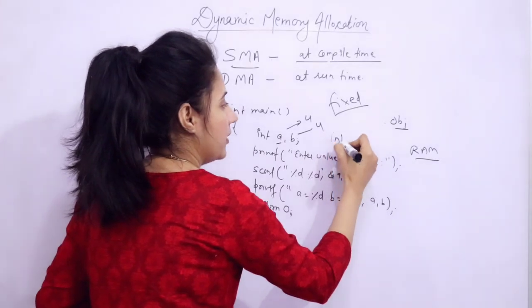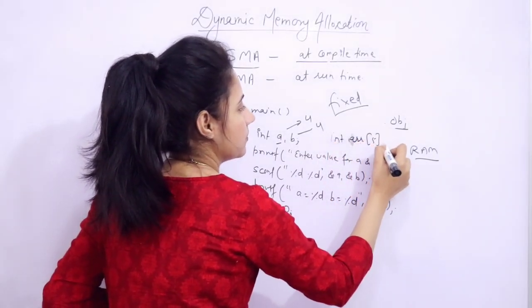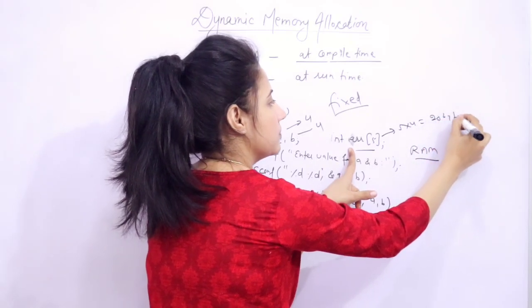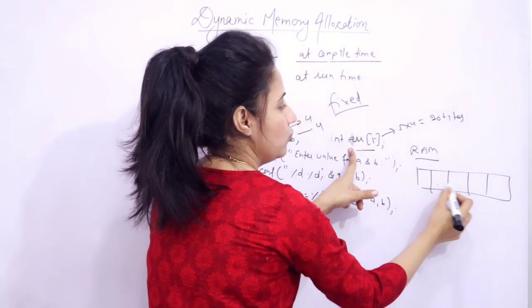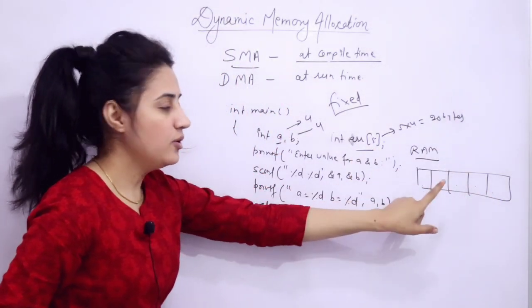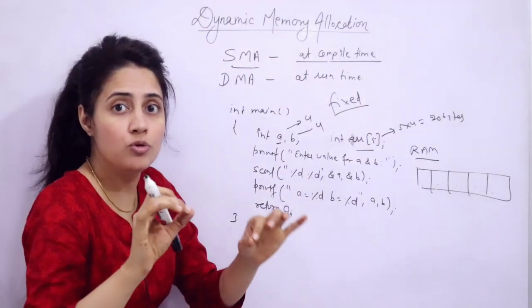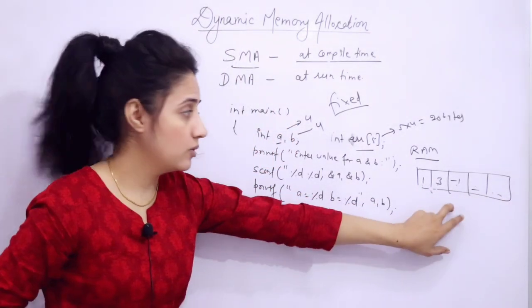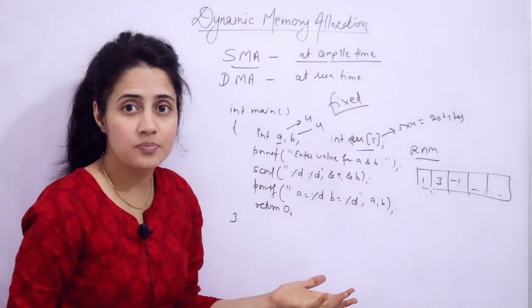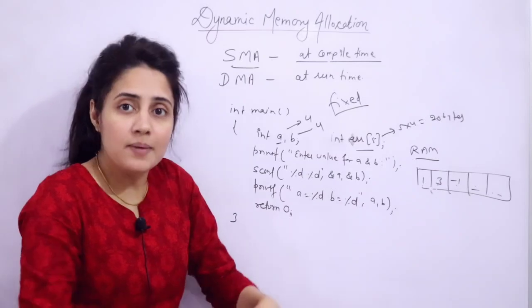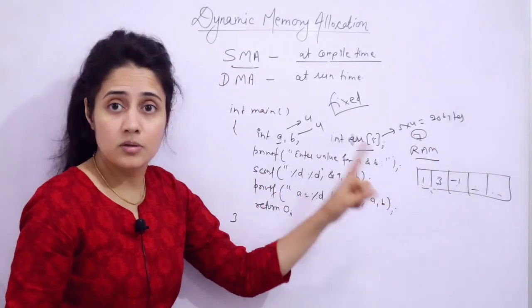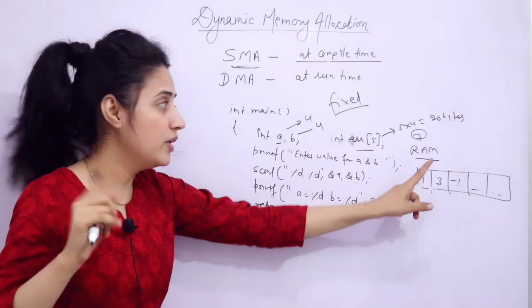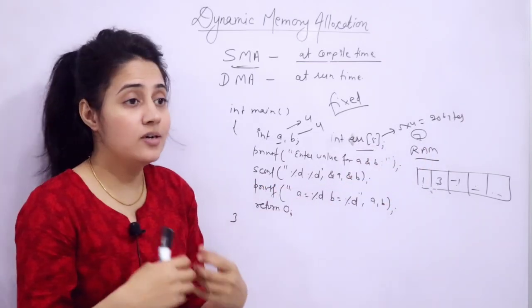Suppose I have taken an array — int array of 5 elements. It is fixed at compile time how many bytes would be allocated: 5 times 4 equals 20 bytes. You can store 5 elements. But at runtime, suppose you are entering only 3 values — those 2 remaining spaces, 8 bytes, are wastage of memory. Or maybe at runtime you want to enter 7 values — in static memory allocation, you cannot do this because memory has only been allocated for 5 elements. This is a drawback of static memory allocation.